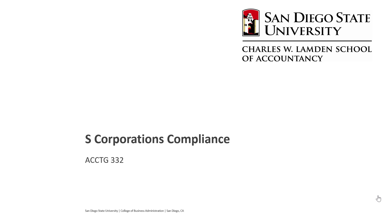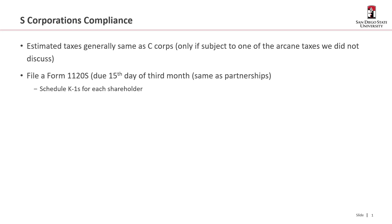Welcome to the ultimate and final Module 5 video. This is on S-Corporation compliance. Estimated taxes for an S-Corp are due generally the same as a C-Corp, but recall that S-Corps generally aren't taxable. So the only reason that comes up is if they have to pay one of those arcane taxes, like the built-in gains tax or the passive income tax.